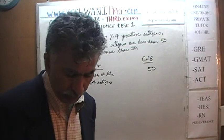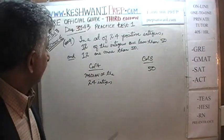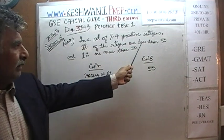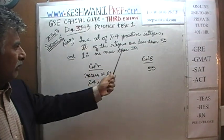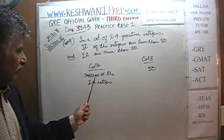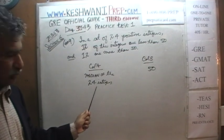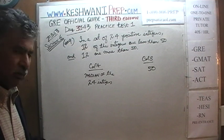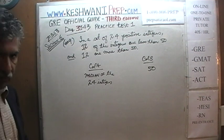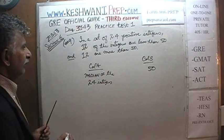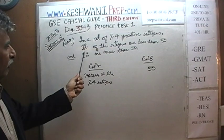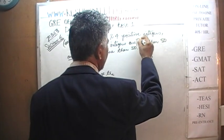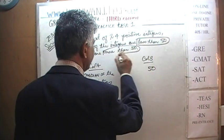As you can see, the problem is already on the blackboard. It says: in a set of 24 integers, 12 of them are less than 50 and 12 of them are more than 50. The question simply is: how does the median of these 24 integers compare to 50? That's all it is. Let's make up some numbers so that 12 of them are less than 50 and the other half are more than 50.